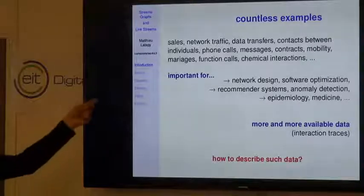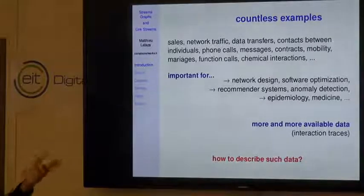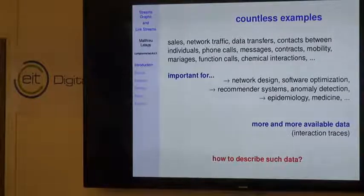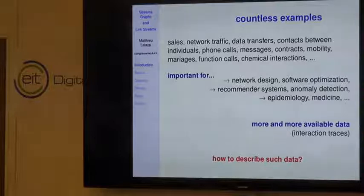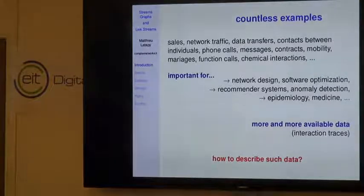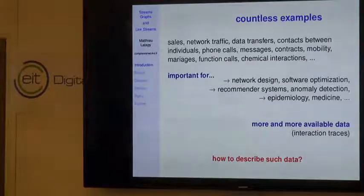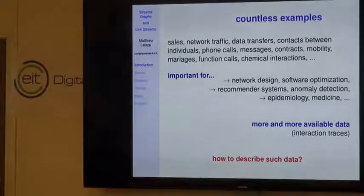These data are important for many applications like network design, software optimization, medicine, epidemiology, recommender systems, and anomaly detection. There are also more and more such data available because of the recording of interaction traces on websites, mobile phones, and so on. The question we ask is how to describe such data precisely.